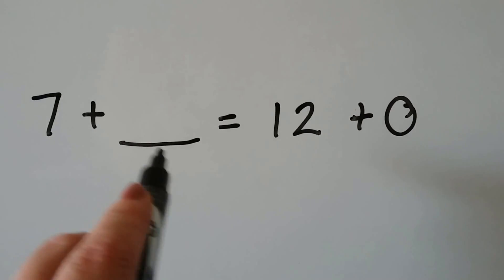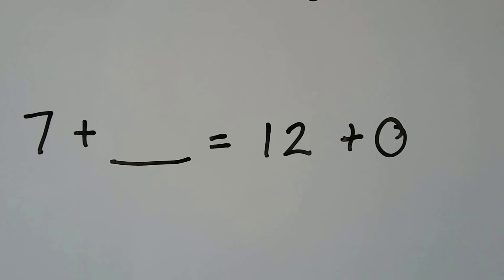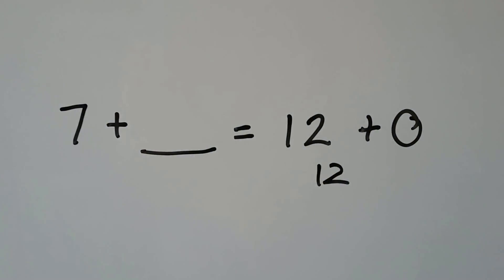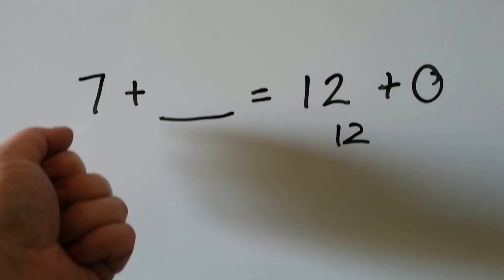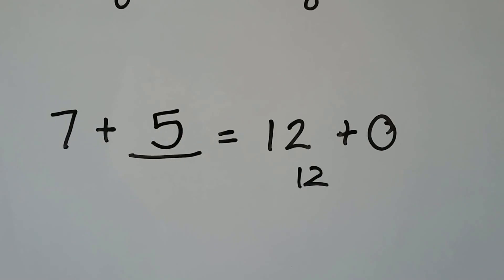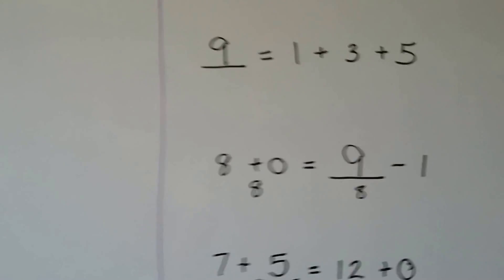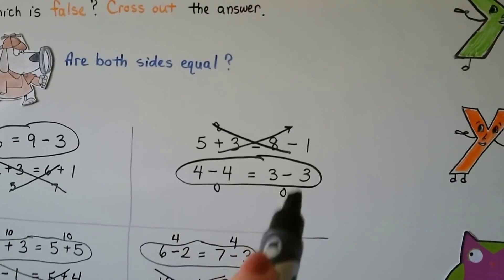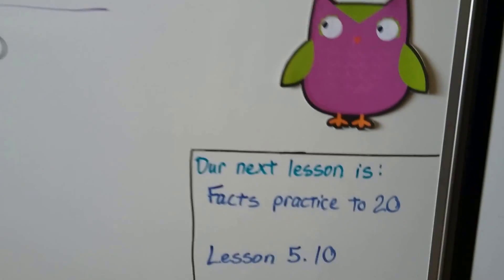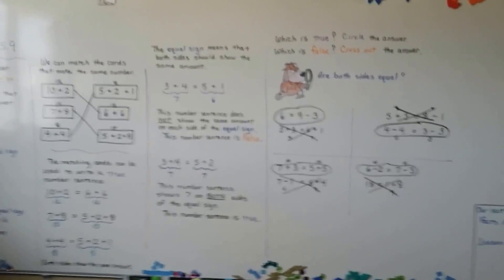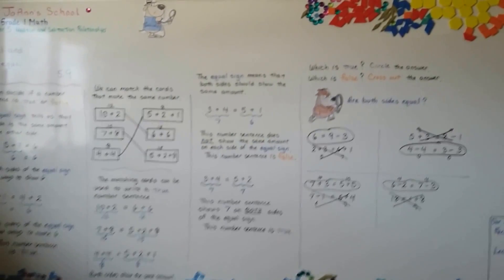7 plus some number is equal to 12 plus 0. Well, 12 plus 0 is 12. So what number can we write here that when we add 7, gives us 12? Let's start with the 7 and count up to 12: 7, 8, 9, 10, 11, 12 — that's 5. So 7 plus 5 is equal to 12 plus 0. Remember that whatever is on one side of the equal sign has to show the same amount as the other side for it to be true.